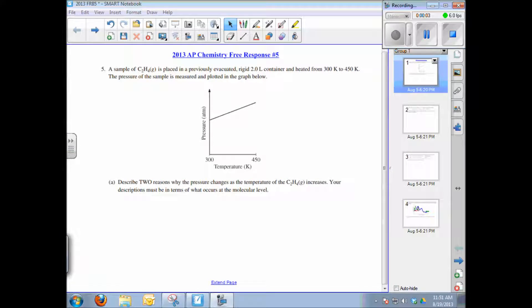This video tutorial will help solve free response question number five from the 2013 AP chemistry exam. A sample of ethene gas is placed in a two liter container, heated from 300 to 450 Kelvin, and the pressure of the sample goes up as shown in the graph. So as temperature increases, pressure also increases. Describe two reasons why the pressure increases, and the description must be in terms of what occurs at the molecular level.